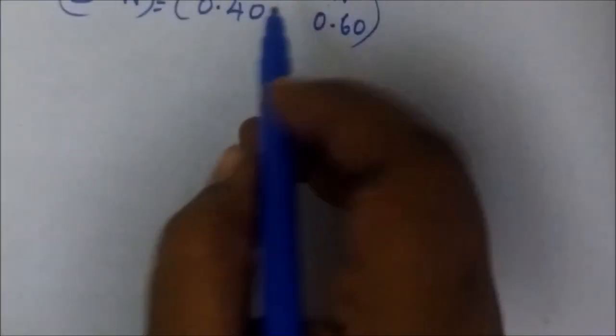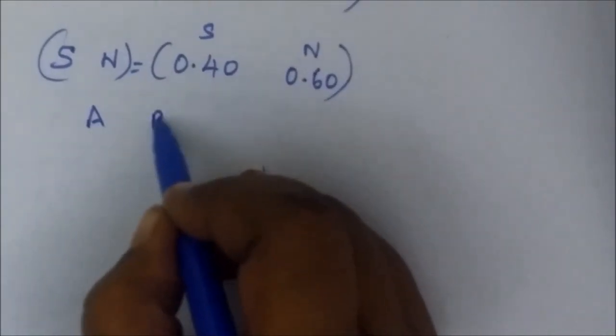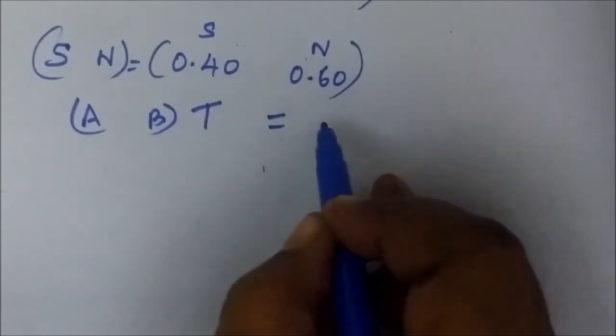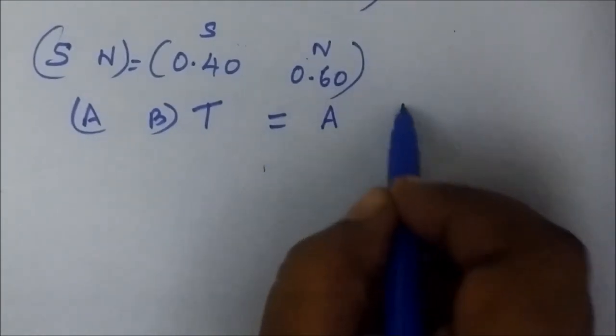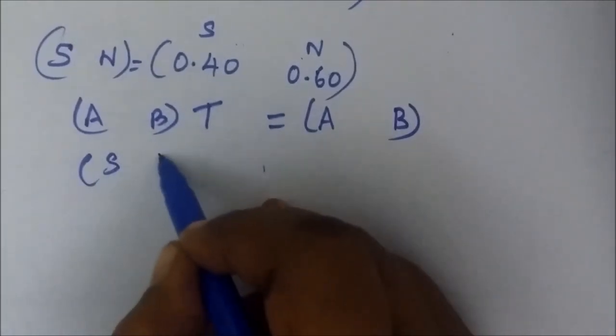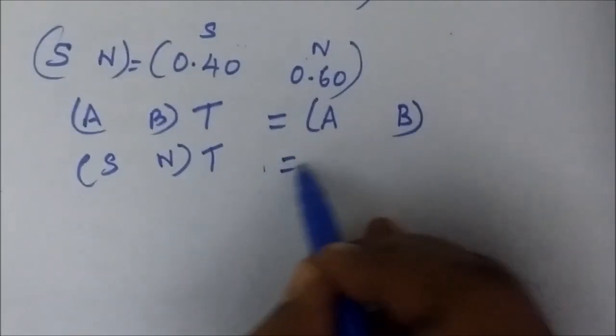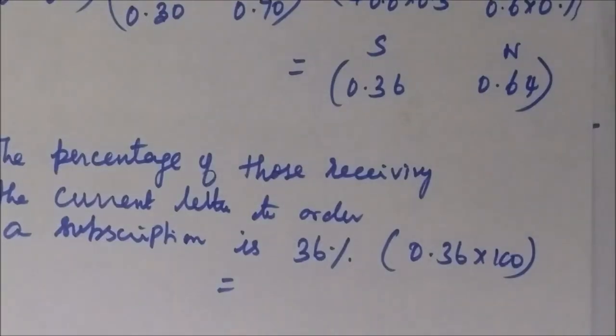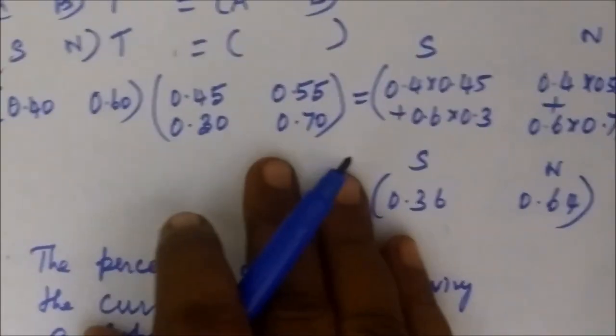We can get the formula at the equally premium stage. The value is obtained for the percentage. Here we are writing AB equal to AB value. This value we want to find, so we substitute the values.